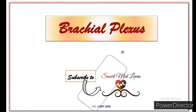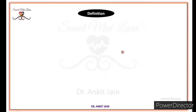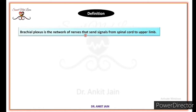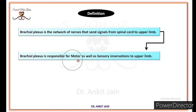In this video, we will discuss about brachial plexus. Let's start with the definition of the brachial plexus. Brachial plexus is the network of nerves that send signals from spinal cord to the upper limb. That means, this brachial plexus is responsible for motor as well as sensory innervations to the upper limb.